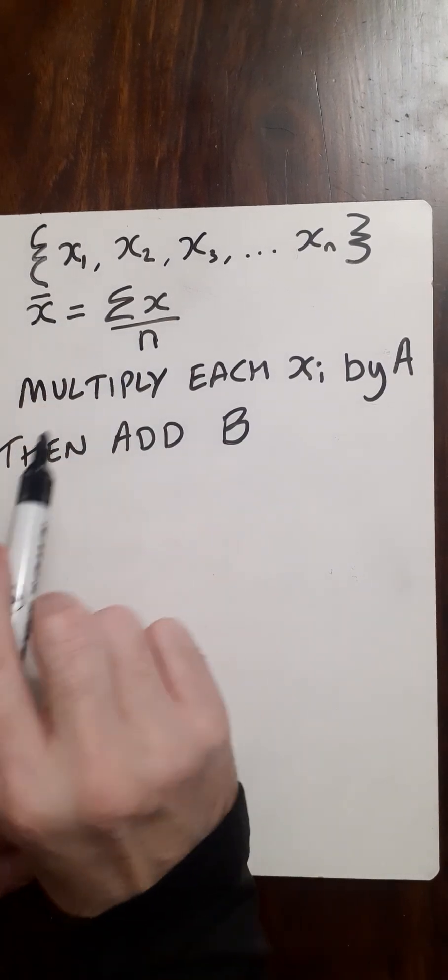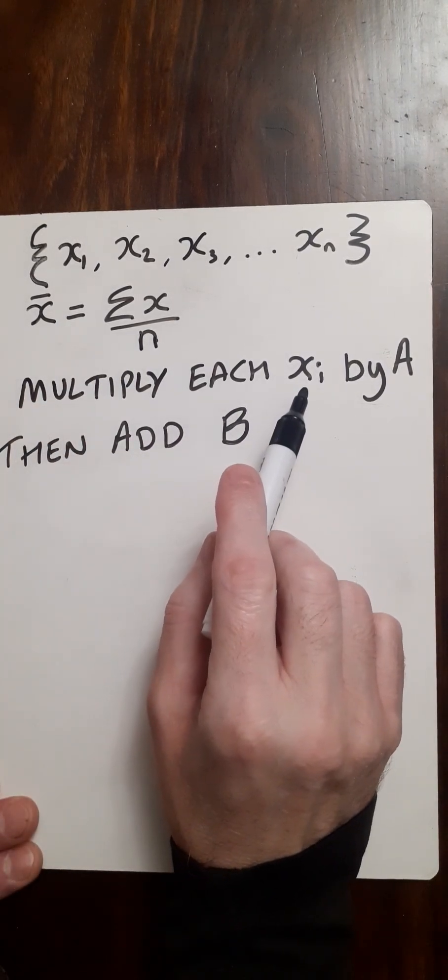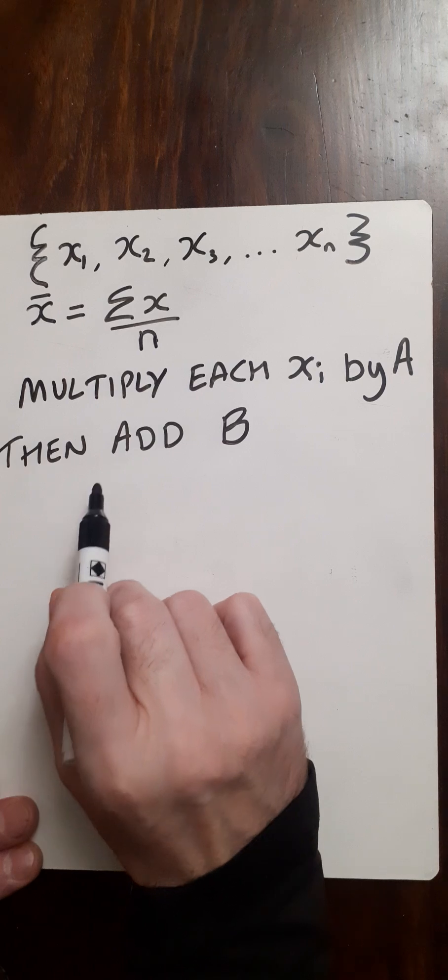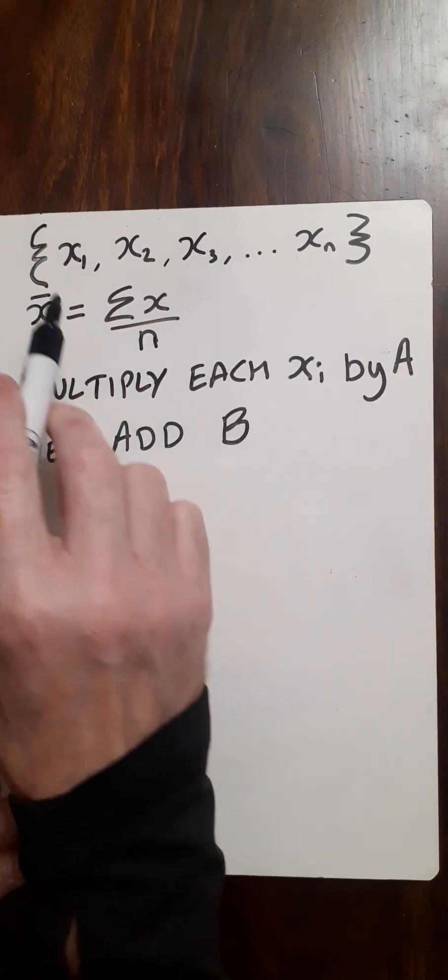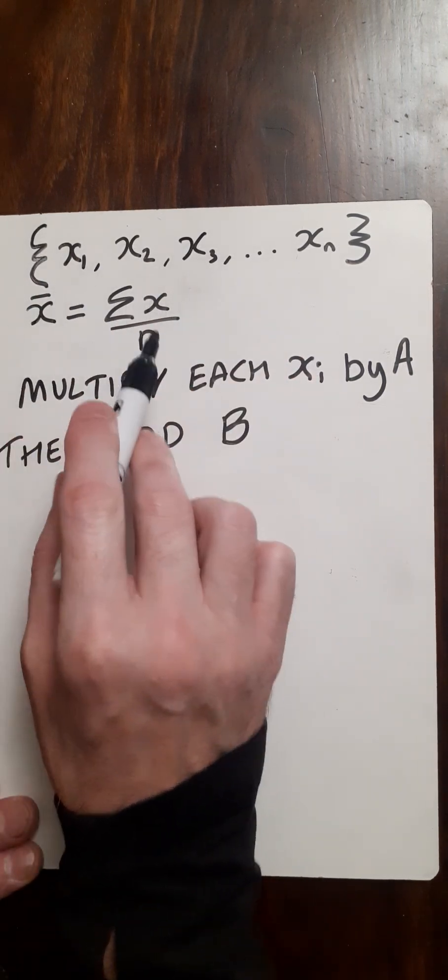So what happens to the mean when we multiply each of the terms by a constant A and then add another constant B? So here's our set of data, here's our original mean.